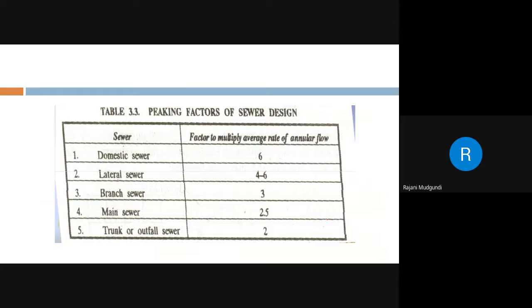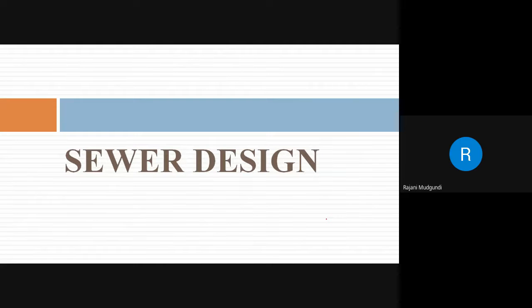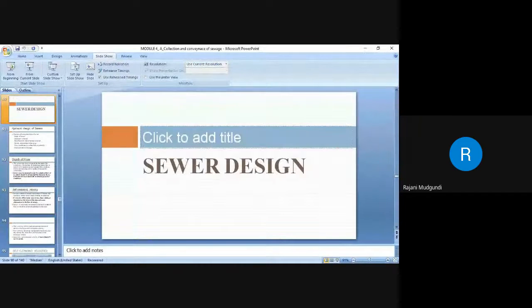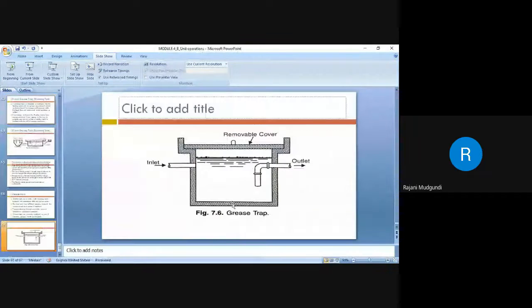A table is also given for peak factors in sewer design for various types of sewers — domestic sewers, lateral sewers, branch sewers — with respective peak factors specified. This concludes the part related to the sewerage system and sewer flow rates.